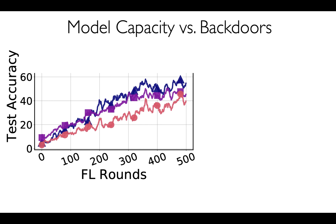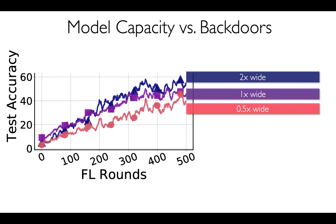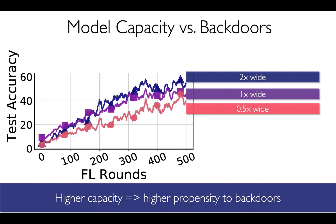Finally, we observe that model capacity and expressiveness play a significant role in the effectiveness of these backdoors. In the case of CIFAR-10 and VGG9, we change the width of the network and observe that the wider the model gets, the more vulnerable it is to backdoor attacks. Hence, high-capacity models lead to higher propensity to backdoor training time attacks.